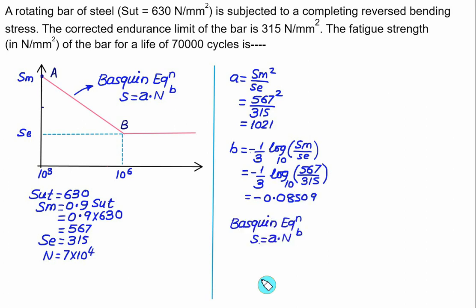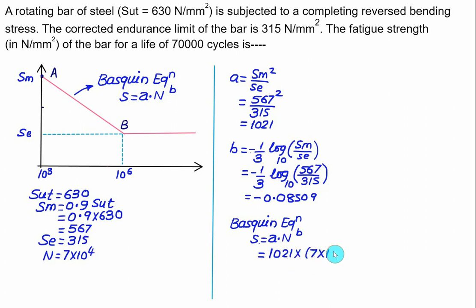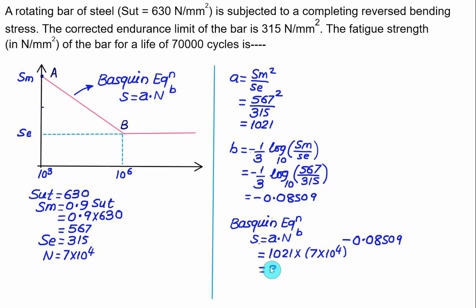To calculate the fatigue strength for N = 7 × 10⁴ cycles, use the Basquin equation: S = A × N^B = 1021 × (7 × 10⁴)^(−0.08509). Solving gives a fatigue strength of approximately 395 MPa.